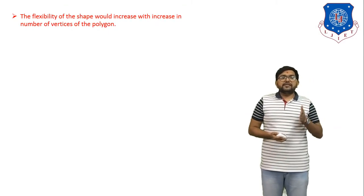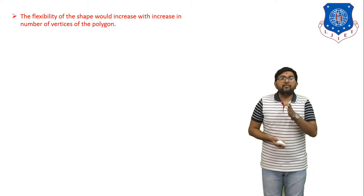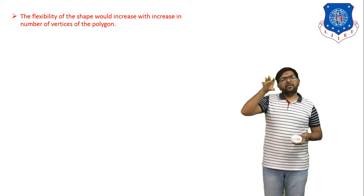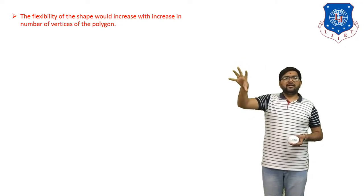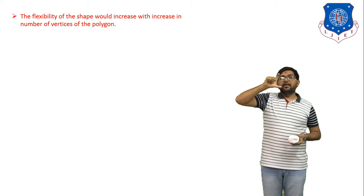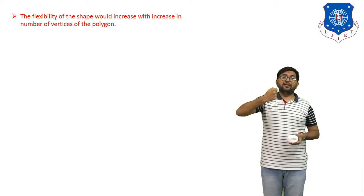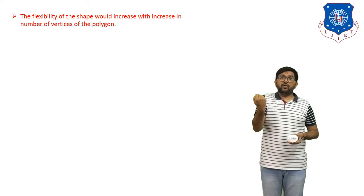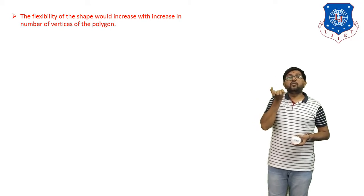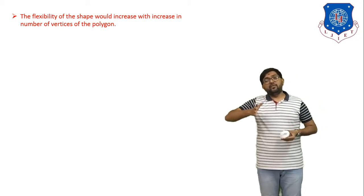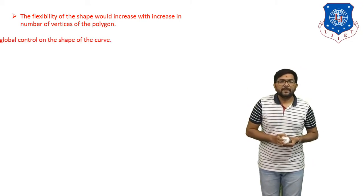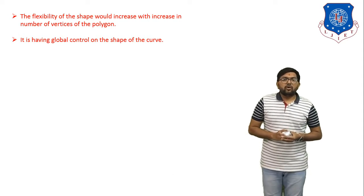Seventh property: the flexibility of the curve's shape increases with an increasing number of polygon vertices (control points). If you have only two points, flexibility depends on two points; with four control points, flexibility depends on all four. Changing the position of any control point changes the shape of the Bezier curve. Increasing the number of control points increases flexibility. The Bezier curve therefore has global control on its shape.